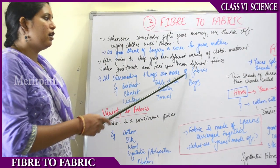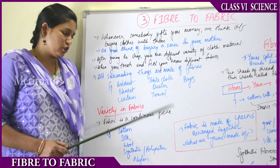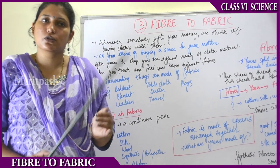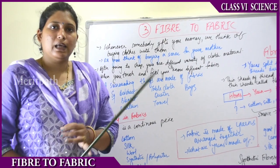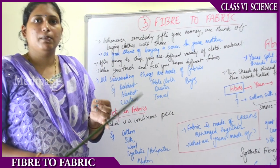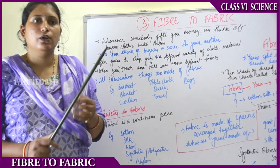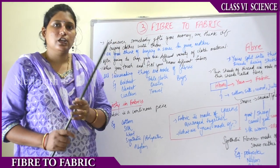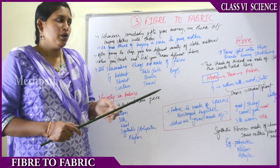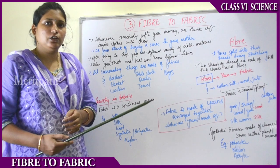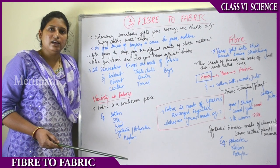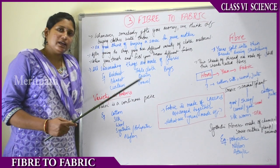Everything which surrounds us is usually made up of fabric. Fabric is nothing but a cloth-like structure, and there are lots of varieties. Fabric is a continuous piece — if you go shopping with your parents and your dad wants to buy cloth for a shirt, the fabric pieces are continuously rolled into long layers and kept on shelves. They will cut and give you one meter or two meters as needed.